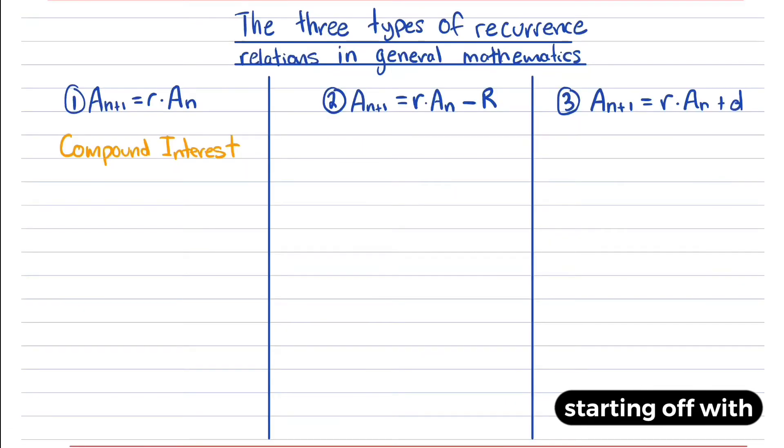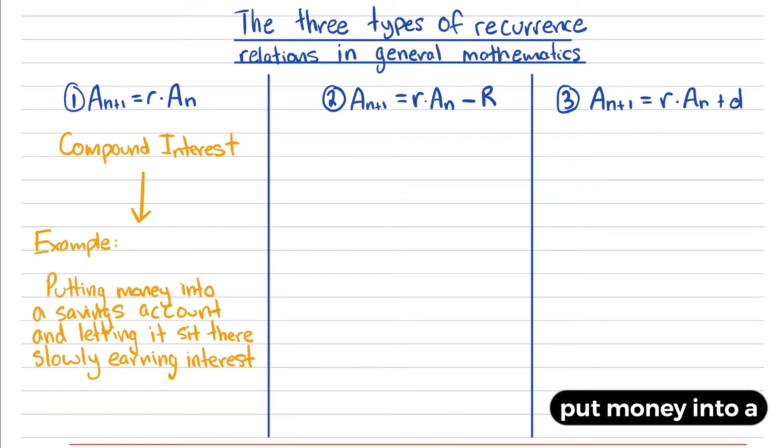Starting with the first recurrence relation, which is related to compound interest. An example is if someone puts money into a savings account and just lets it sit there, slowly earning interest without withdrawing or depositing any money—just letting it sit there earning interest.